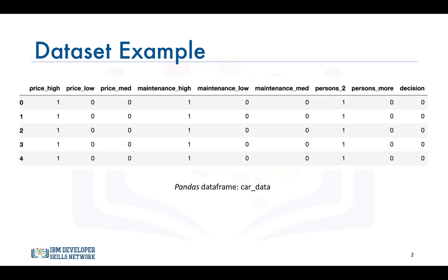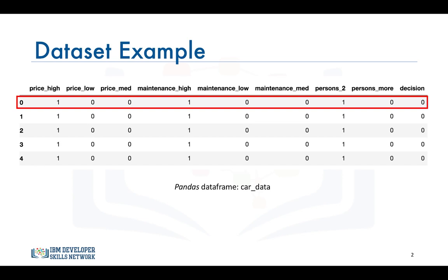If you take the first car in the data set it is considered an expensive car, has high maintenance cost, and can fit only two people. The decision is zero meaning that buying this car would be a bad choice.